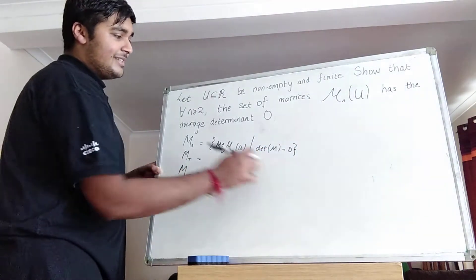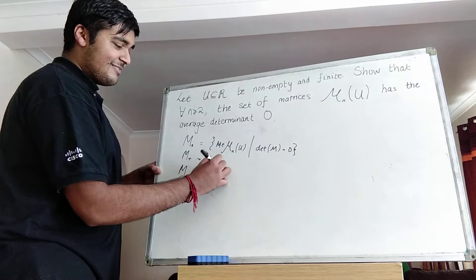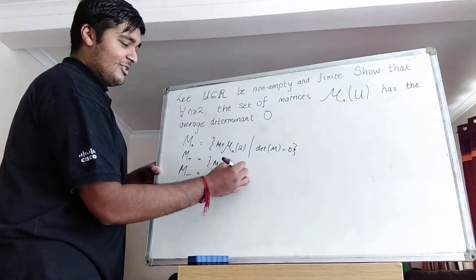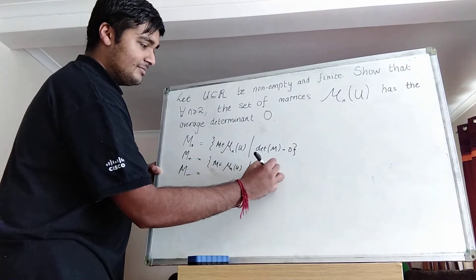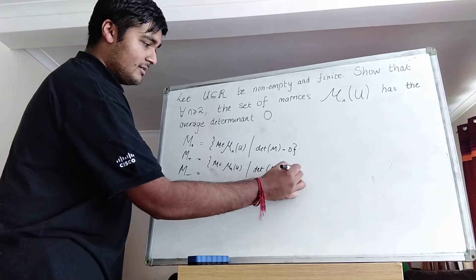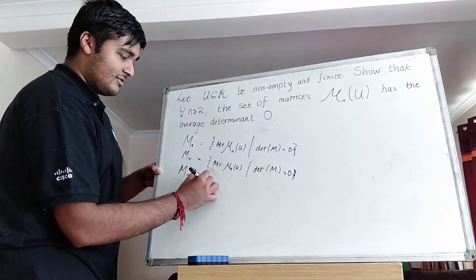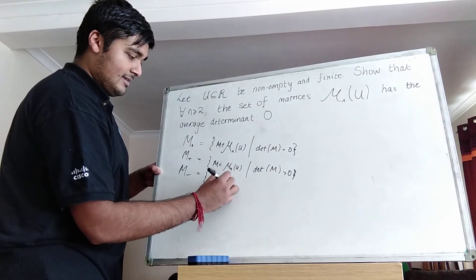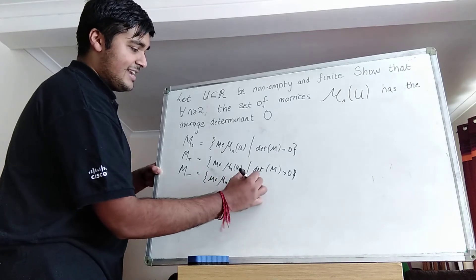Okay, this is going to be a similar set but the set of matrices in M_n(u) which have positive determinant and the set of matrices which have negative determinant.